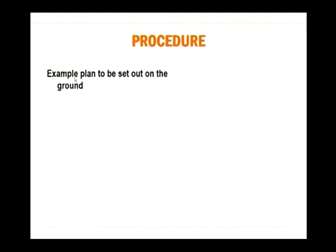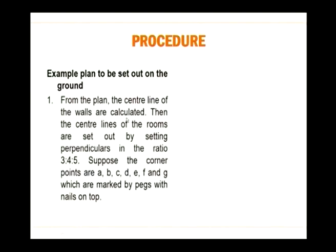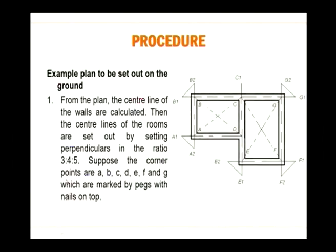In the procedure example, plans are set out on ground. From the plan, centre lines of the walls are calculated, then the centre lines of the rooms are set out by setting perpendicular lines using the ratio 3:4:5. The corner points A, B, C, D, E, F and G are marked by pegs with nails on top. These dotted lines going through the building are the centre lines for the two rooms, marked with alphabets to ensure accuracy is maintained.